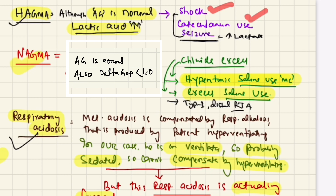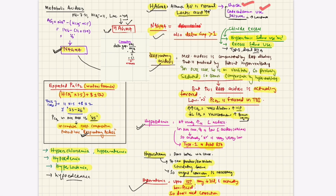To summarize: the high anion gap acidosis is due to lactic acidosis from shock, catecholamine use, and seizures — each must be addressed individually. The normal anion gap acidosis is from hypertonic and normal saline use or Type 1 RTA — to be managed separately. Hypocalcemia must be corrected urgently. This is how we read an ABG — examining each parameter, understanding how they relate to each other, and managing each component individually and collectively. Thank you very much.